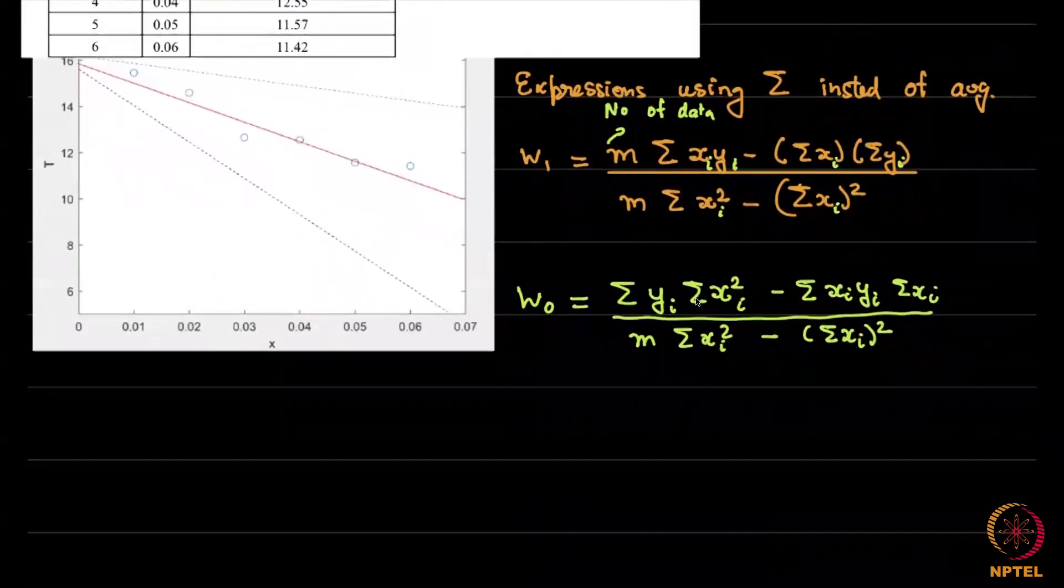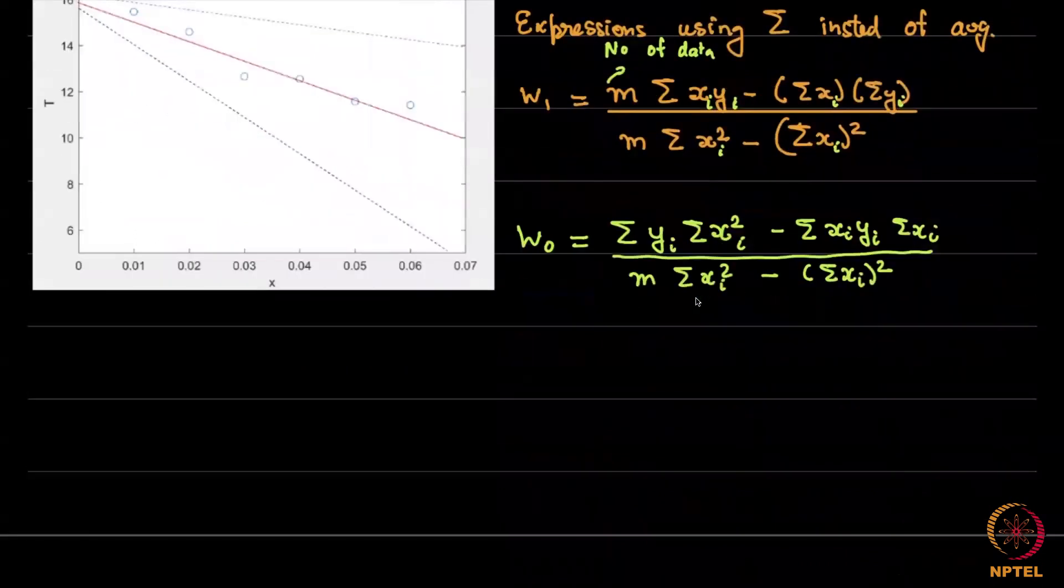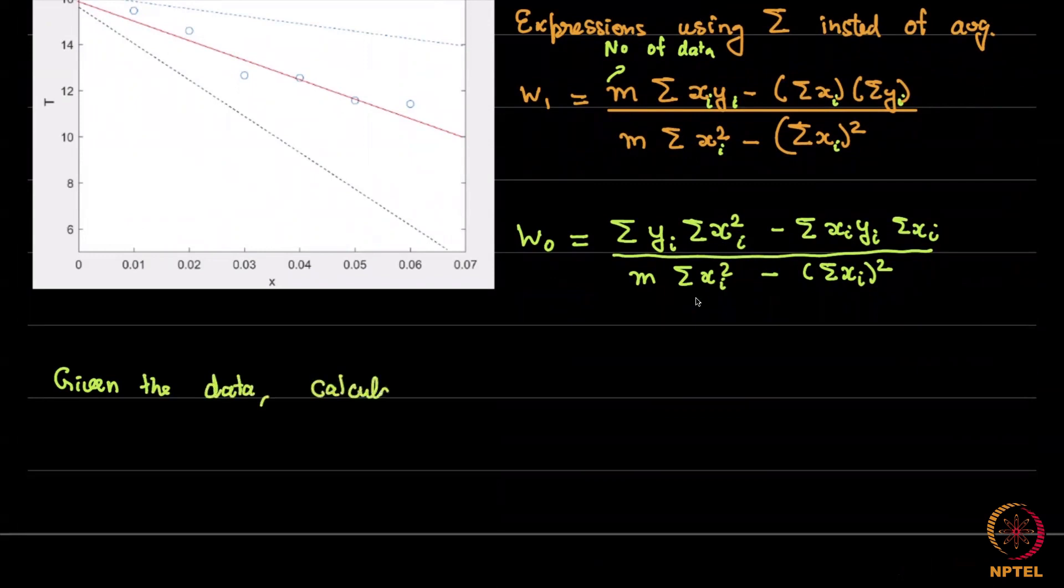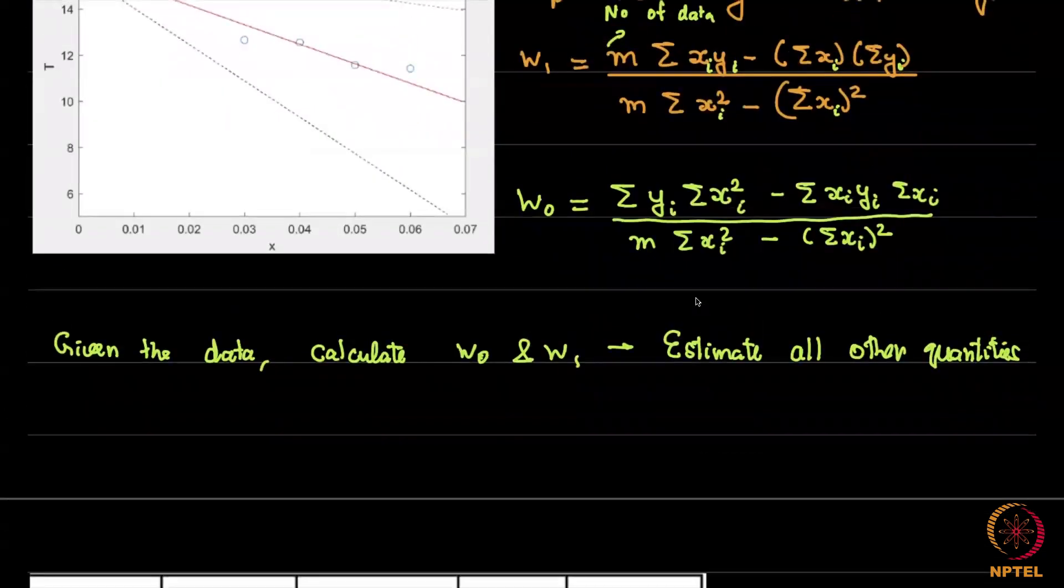Now what we want to find out is the heat flux and the boundary temperature. So what we need to do with this is actually calculate, given the data, w0 and w1. And from here estimate all other quantities. Now what are the quantities we want to estimate? We want to estimate the temperatures. Let us say we want T0, TL and we also want an estimate of the heat flux.